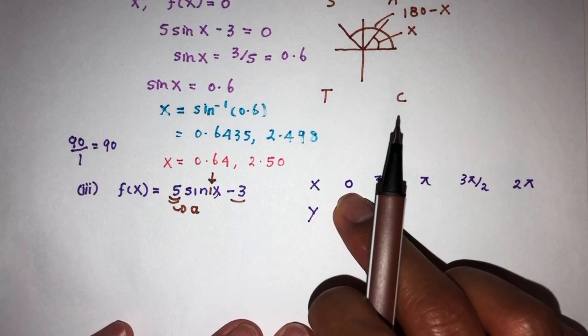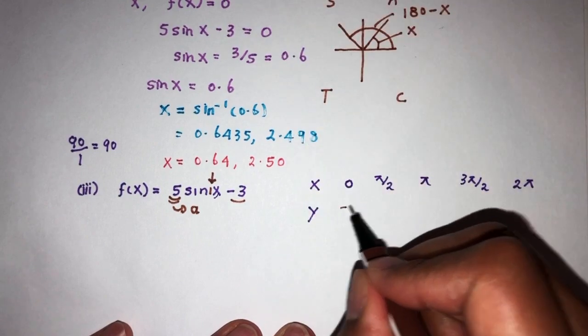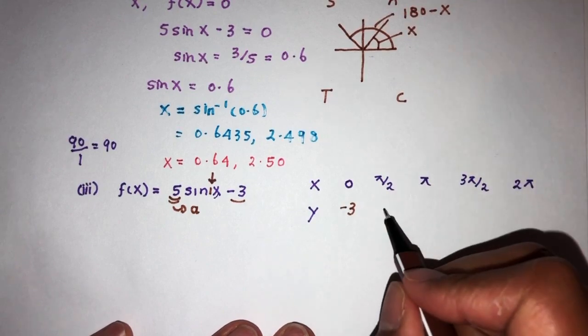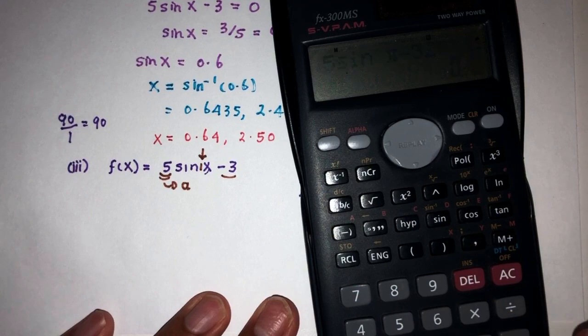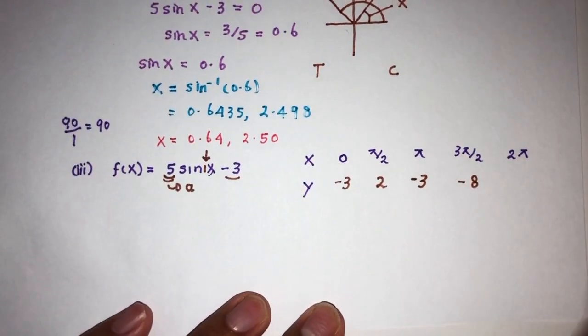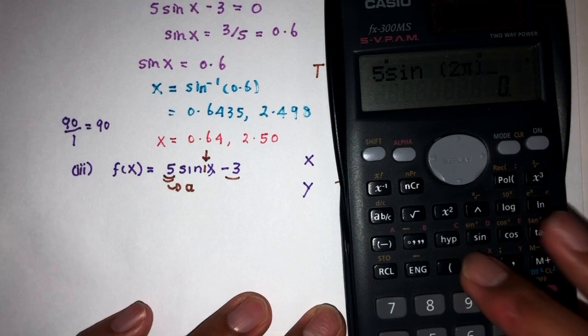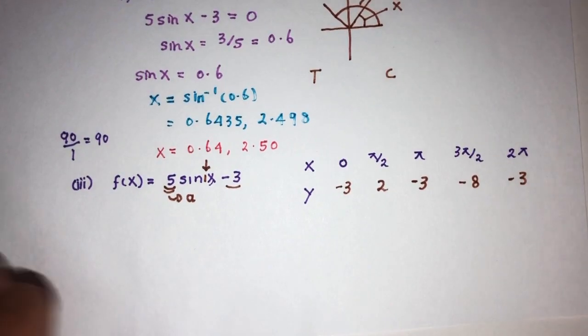When x equals 0: 5 sin 0 minus 3 equals minus 3. When x equals pi over 2: we already know this is 2 from the given values. When x equals pi: 5 sin pi minus 3 equals minus 3. When x equals 3 pi over 2: we know this is minus 8 from the given values. When x equals 2 pi: 5 sin 2 pi minus 3 equals minus 3.